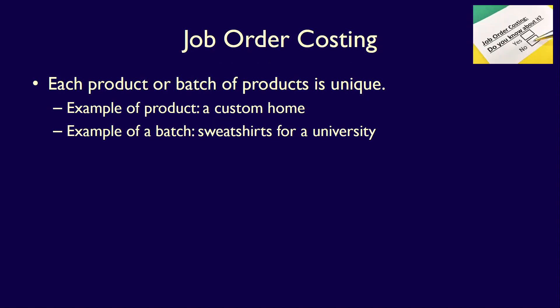A job order costing system is used when the products being produced have unique characteristics. Job order costing can be used for individual products, such as the building of a custom home, but it can also be used for a batch of products, such as the production of a university's sweatshirts, all with the university's name and logo on them.